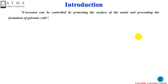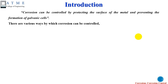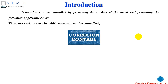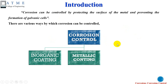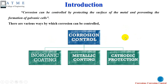Corrosion can be controlled by protecting a base metal's metallic surface by preventing the formation of a galvanic cell. If we prevent a particular metal from forming a galvanic cell, we can prevent corrosion. There are various ways by which corrosion can be controlled: inorganic coating, metallic coating, and cathodic protection. Today we shall discuss these three different types of corrosion control.